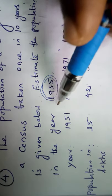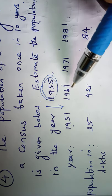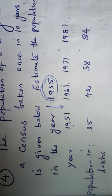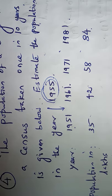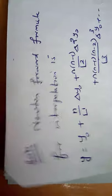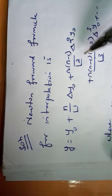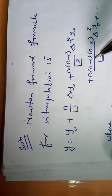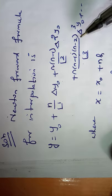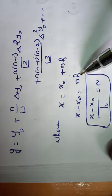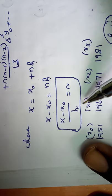Since 1955 lies within 1951 to 1961, we have to apply the Newton forward formula for interpolation. The formula is: y = y₀ + (n/1!) Δy₀ + (n(n−1)/2!) Δ²y₀ + (n(n−1)(n−2)/3!) Δ³y₀, where x = x₀ + nh, giving n = (x − x₀) / h.